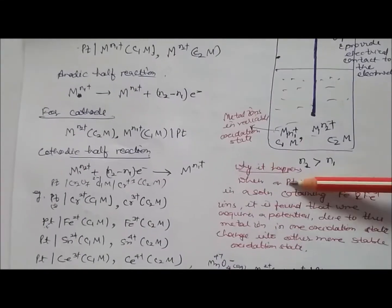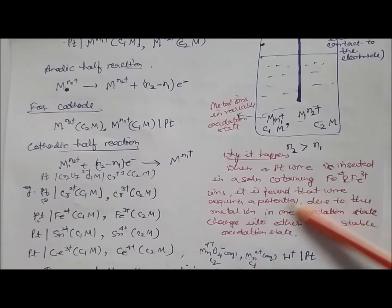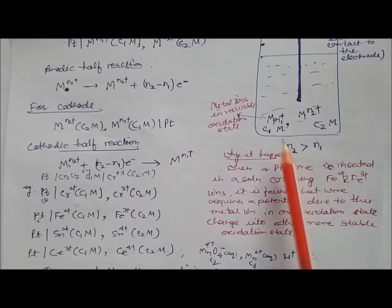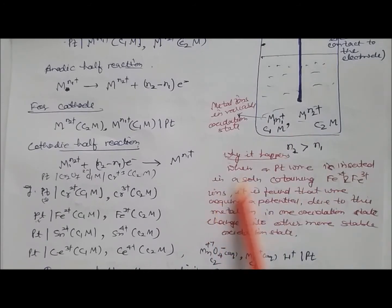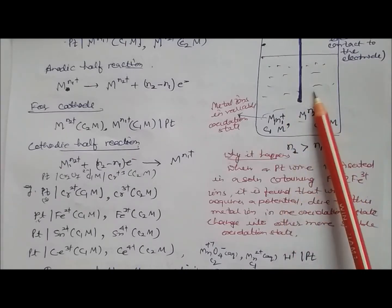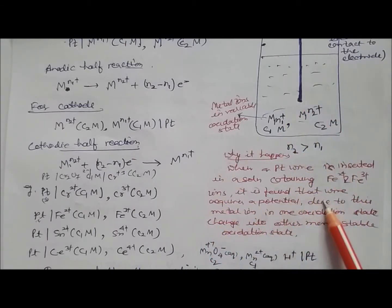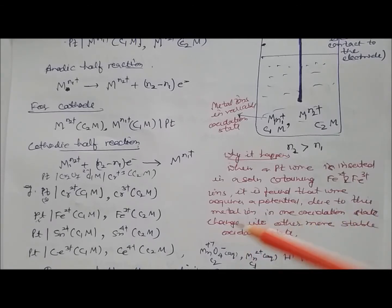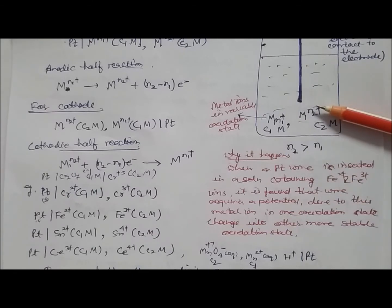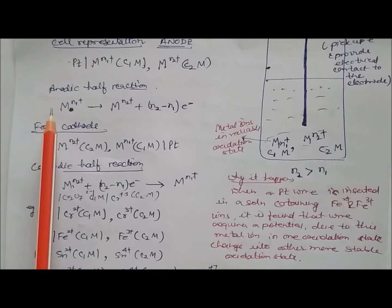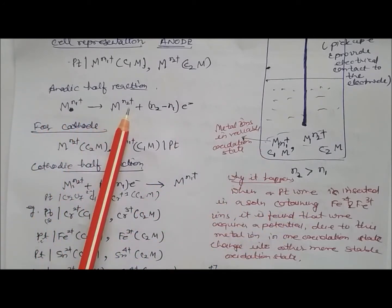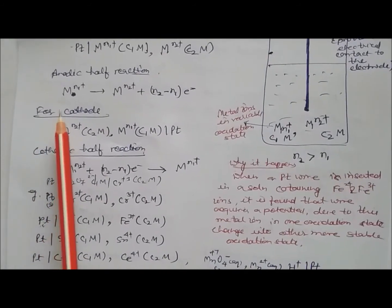When a platinum wire is inserted into a solution containing two ions — for example Fe²⁺ (ferrous) and Fe³⁺ — the wire acquires a potential. Due to the two ions, one oxidation state changes into the other more stable oxidation state after acquiring potential. At the anode, the smaller charge (e.g., +2) converts to the higher charge (+3) state, losing electrons.